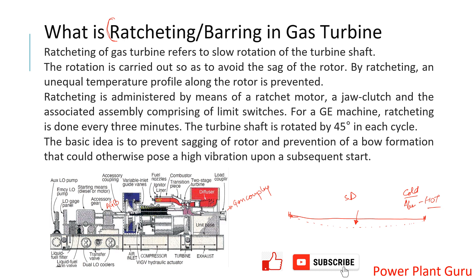If there is this kind of bow and you start the machine, it will behave like this — rather than rotating in a straight line, the rotation will be in a bowed path, with one side as the top and the other as the bottom of the shaft. This kind of thing will cause high vibration or rubbing of the shaft or rubbing of bearing white metals.